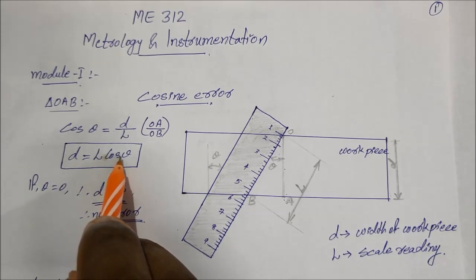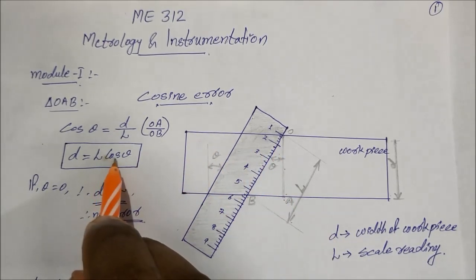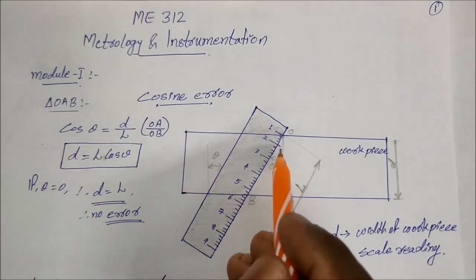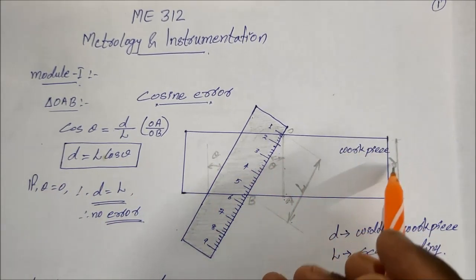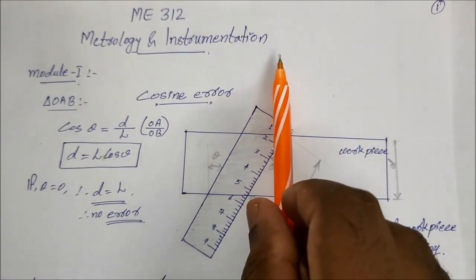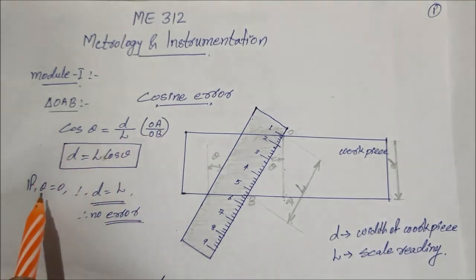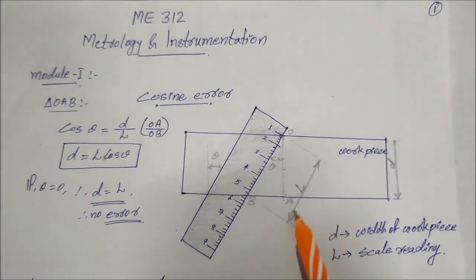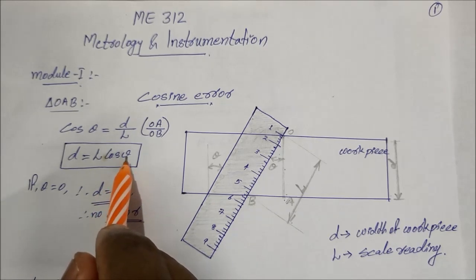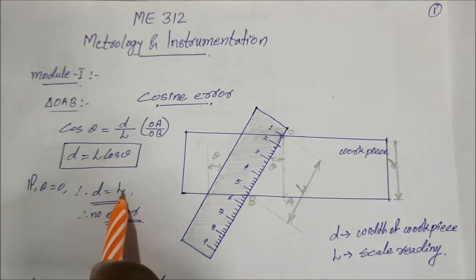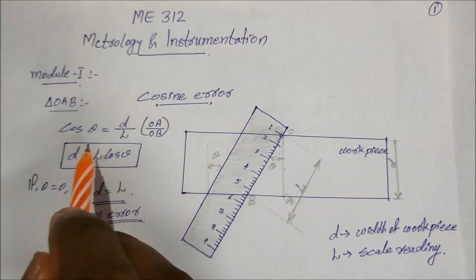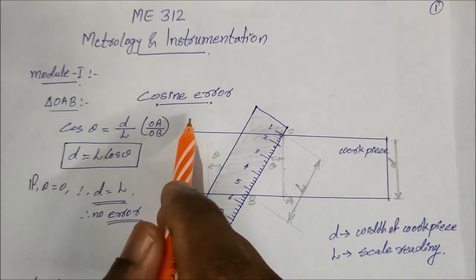If cos theta is not corresponding, errors are created. For example, if theta equals 0, that means the workpiece and the measuring scale are parallel, so theta is 0. The scale reading value is d. Cos 0 equals 1, that means d equals L. So no error is created. This error is called cosine error.